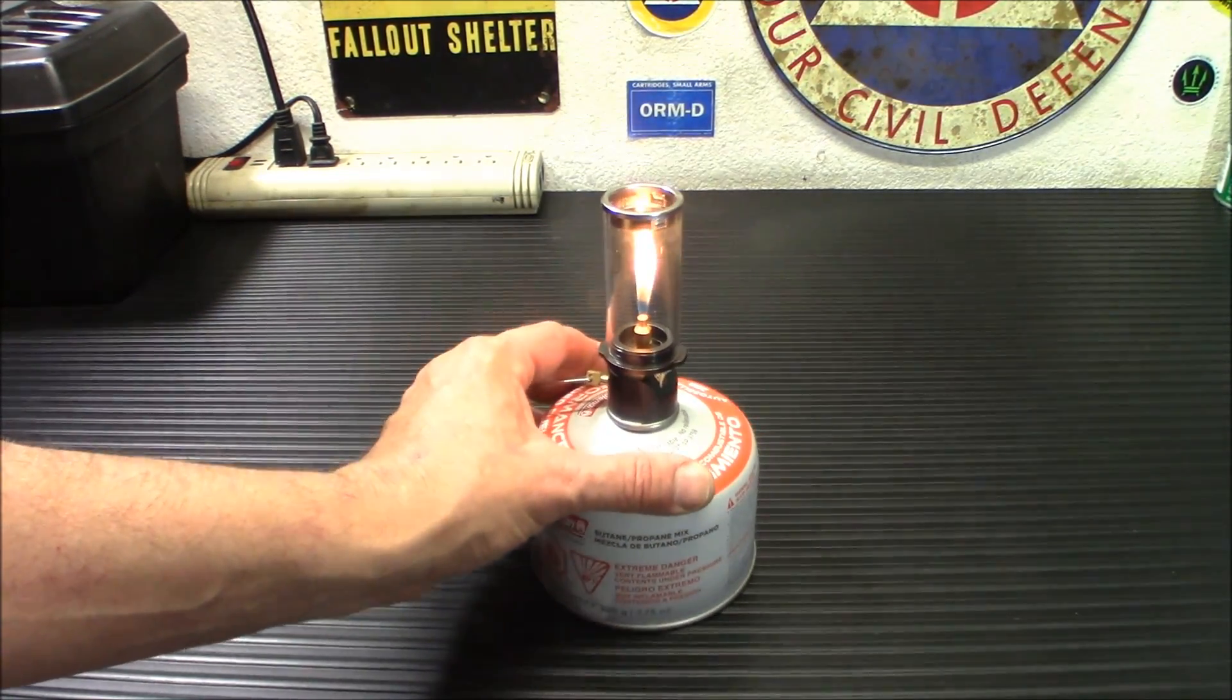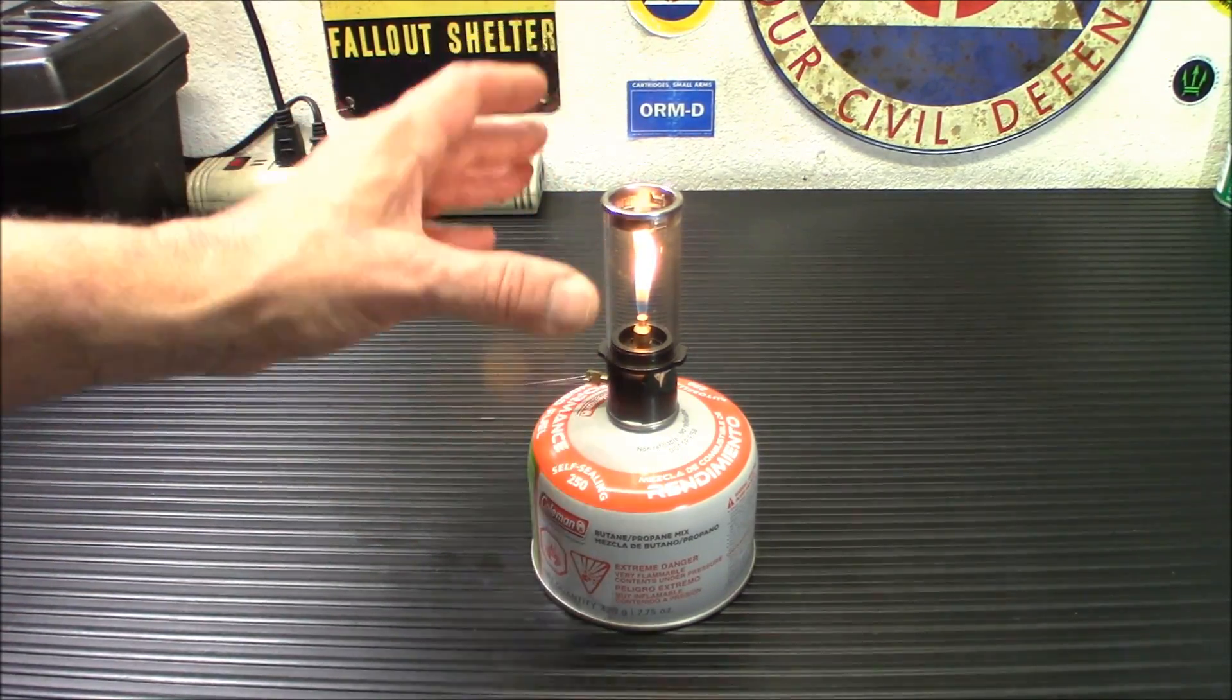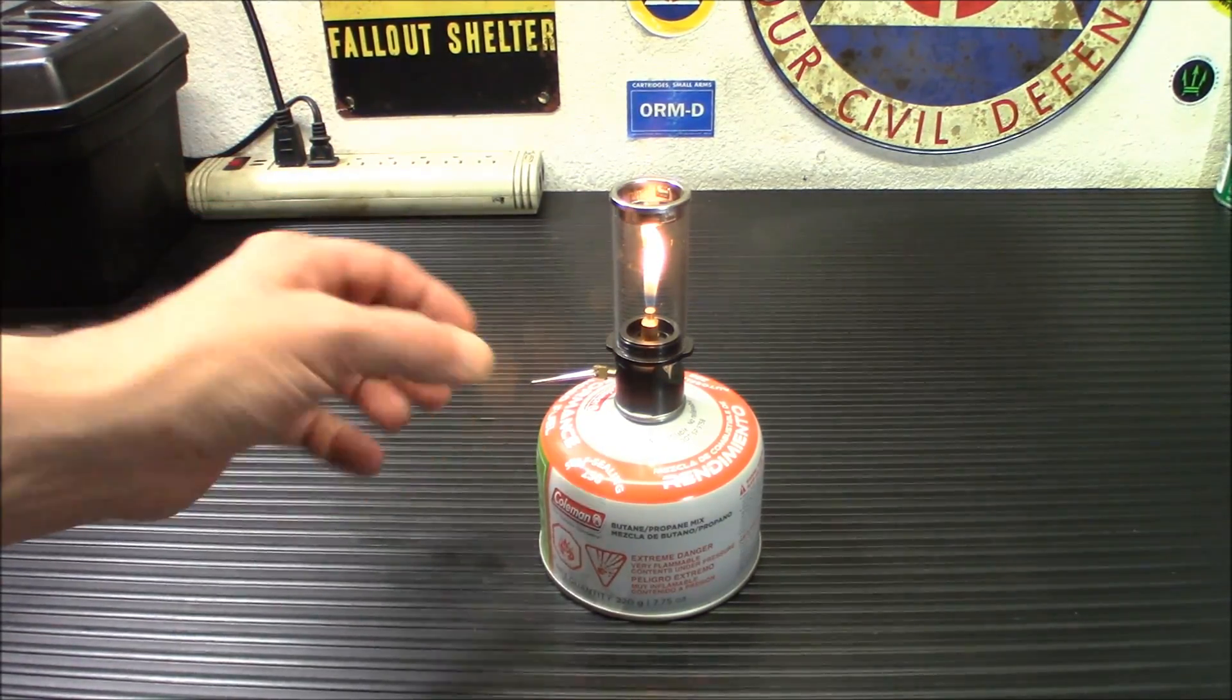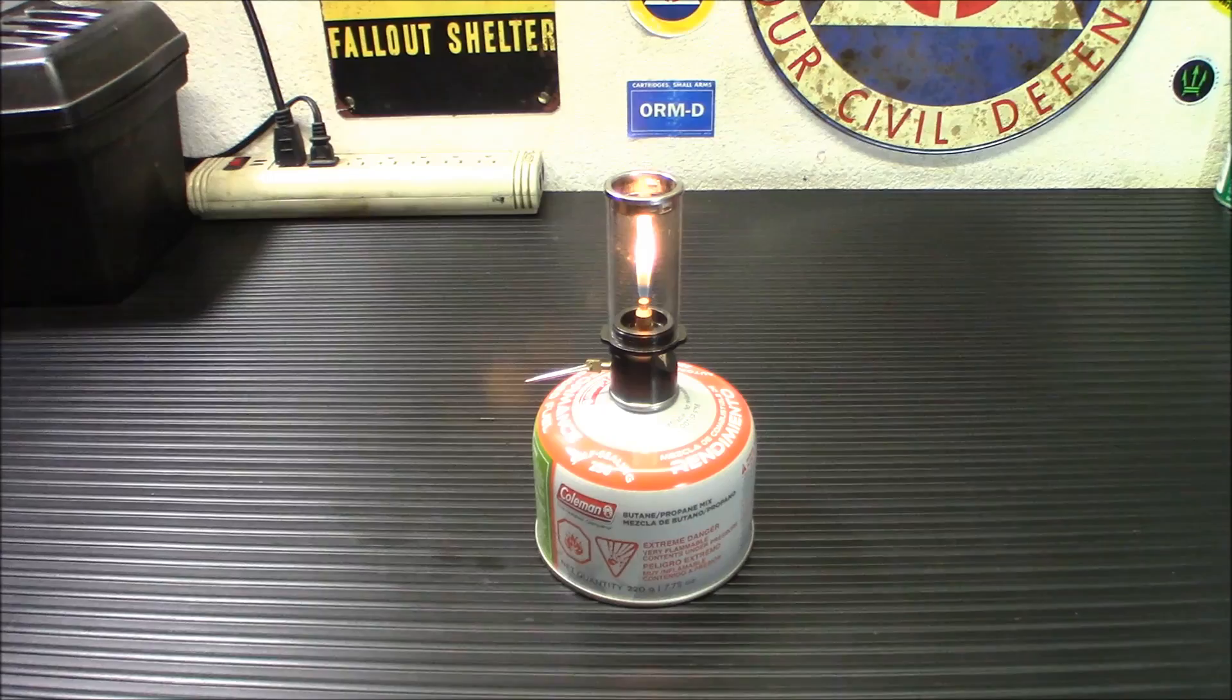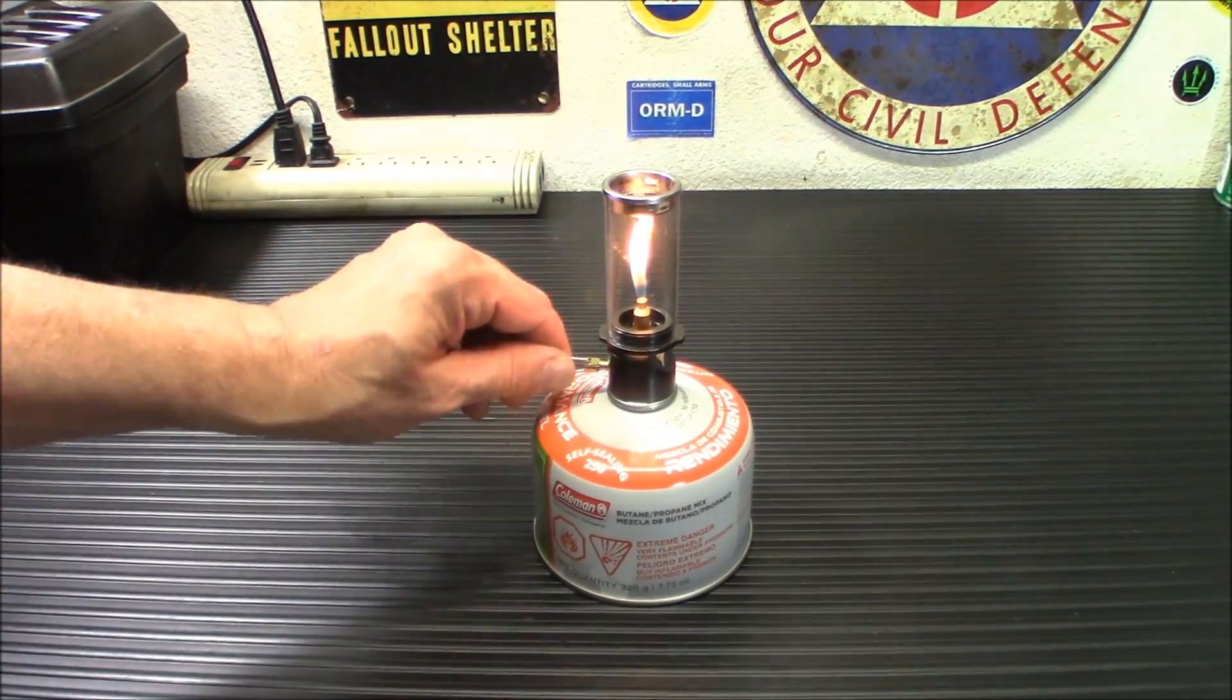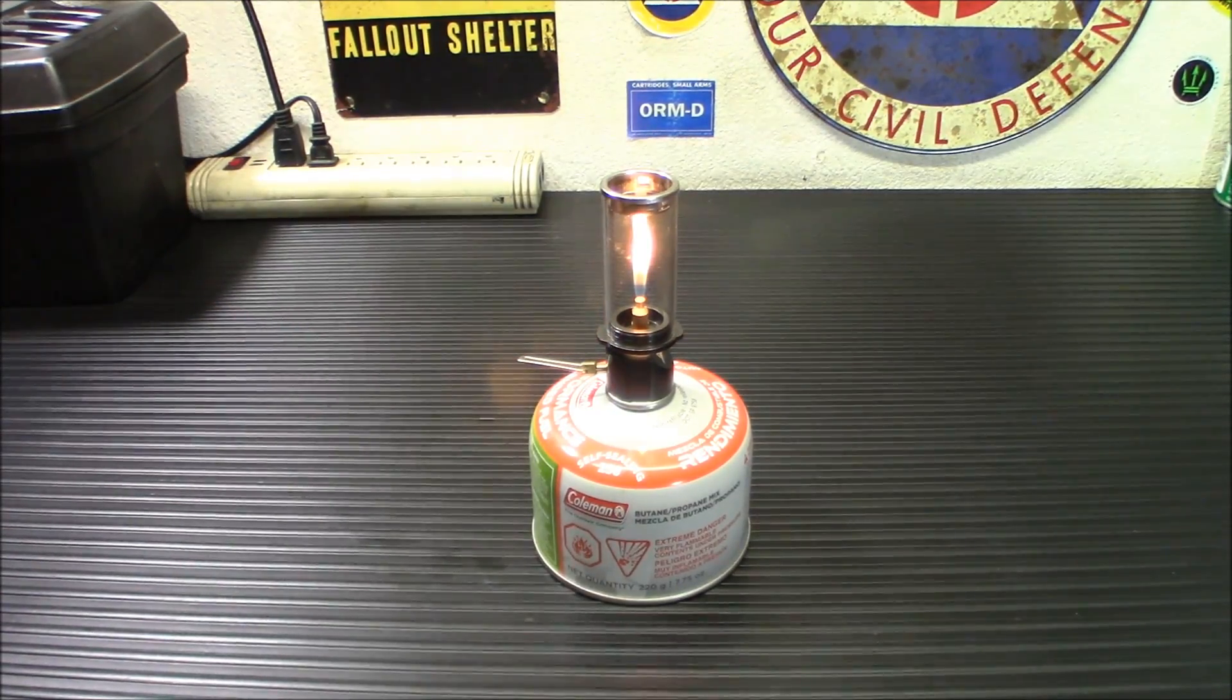Now, I did review one of these that actually has a mantle and uses, it's more like a lantern, in other words. And it's very bright. But for something like this inside a tent where you don't want a ton of light or maybe while you're eating dinner at camp, whatever, something like this is pretty cool. I think it would definitely come in handy for backpacking or things like that.